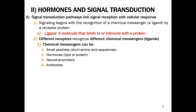Different messengers can act on the cell: we can have small peptides, which are short pieces of amino acids; we can have hormones — lipids and proteins; we also have neurotransmitters and antibodies. These bind to receptors and trigger a response inside the cell. For neurotransmitters, they're going to stimulate nerve impulses. For antibodies, when they bind to a cell, it triggers the cell to self-destruct or fall apart. So these are examples of ligands that, when they bind to a receptor, trigger a response inside the cell.